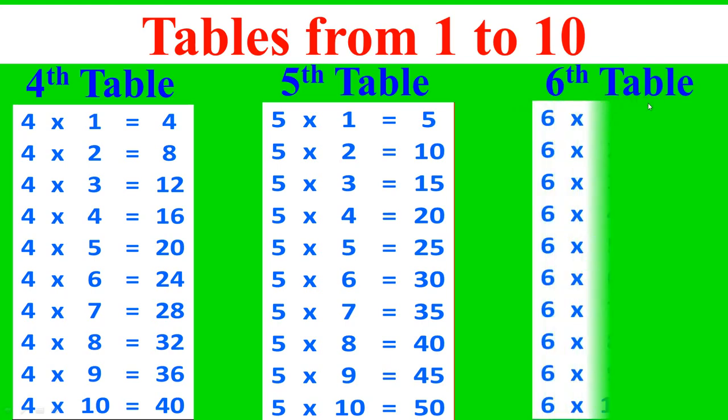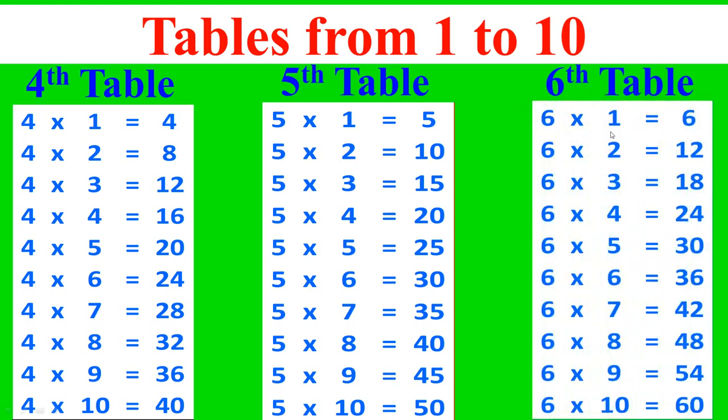6th table: 6 times 1 equals 6, 6 times 2 equals 12, 6 times 3 equals 18, 6 times 4 equals 24, 6 times 5 equals 30, 6 times 6 equals 36, 6 times 7 equals 42, 6 times 8 equals 48, 6 times 9 equals 54, 6 times 10 equals 60.